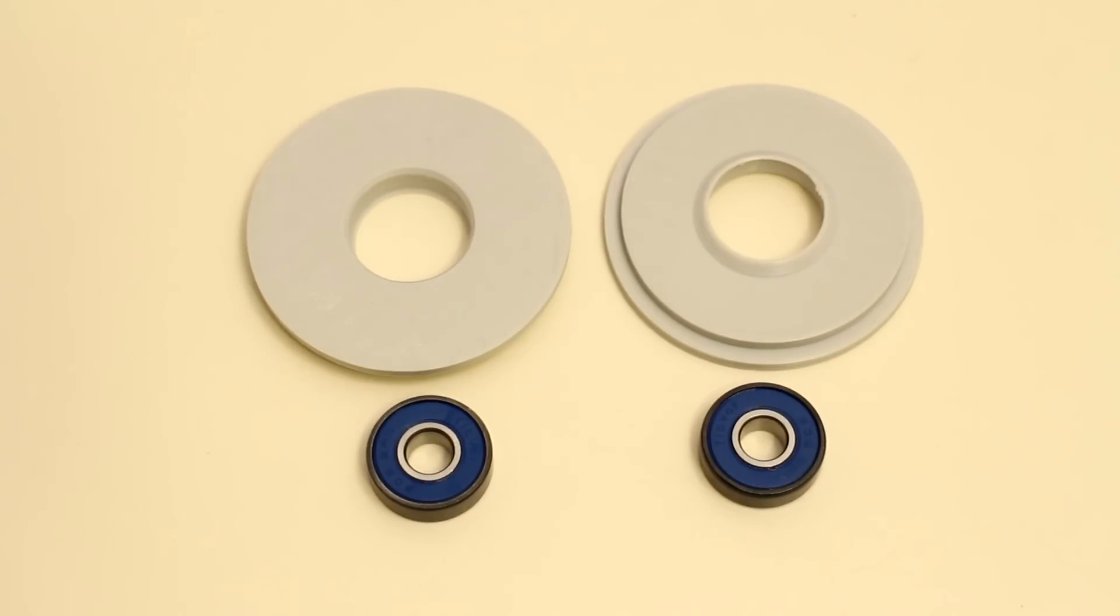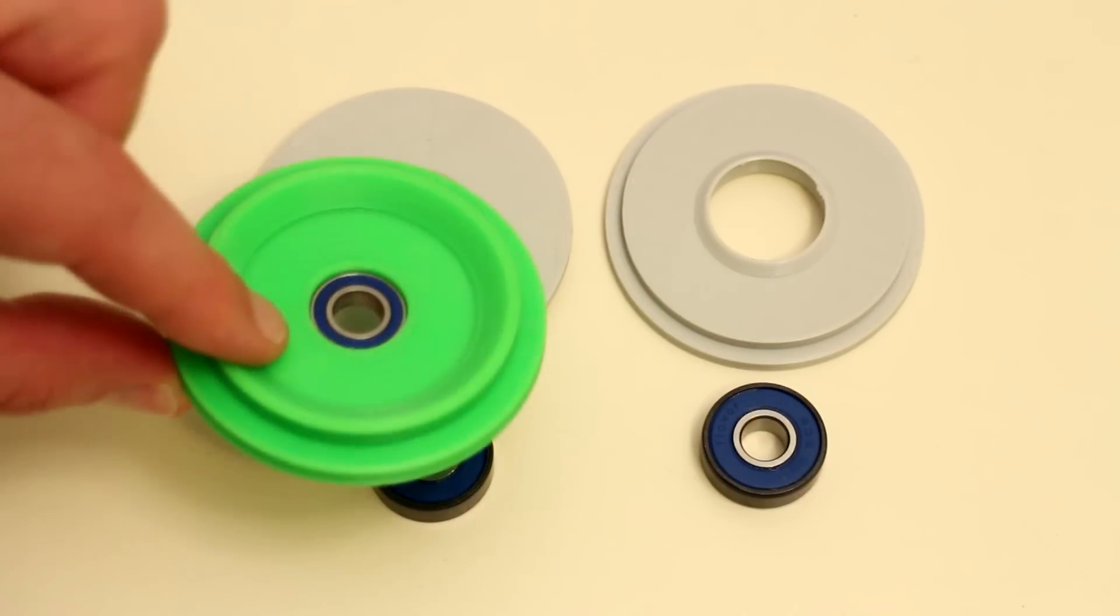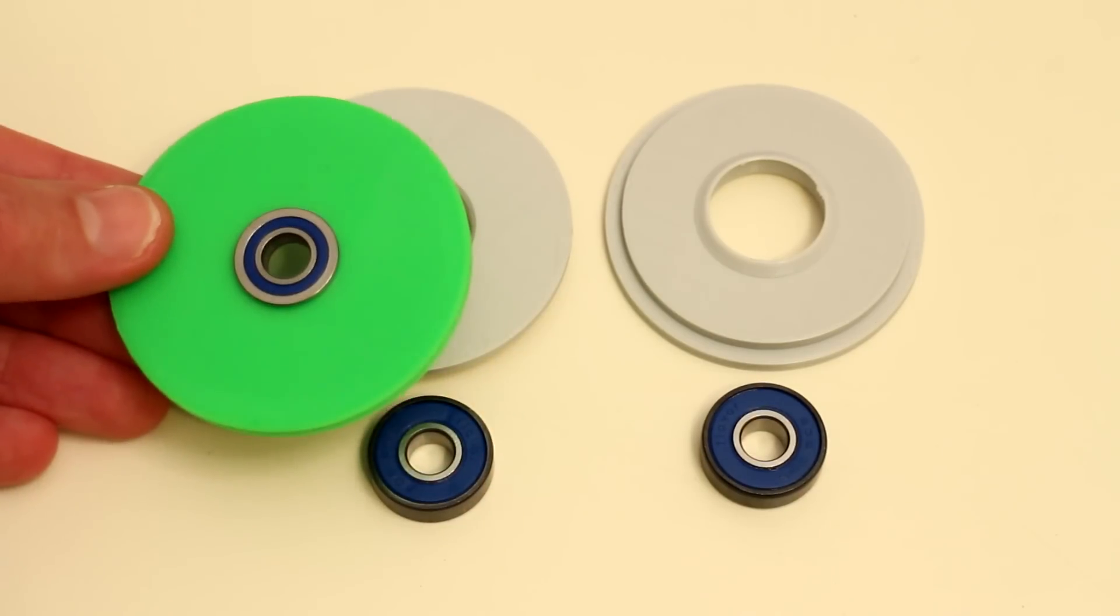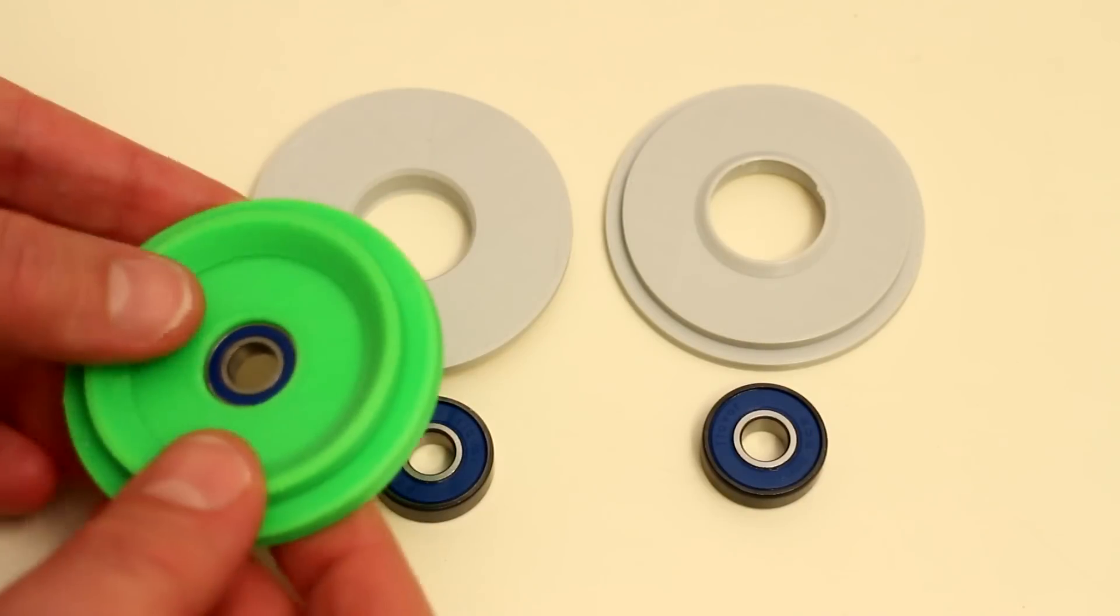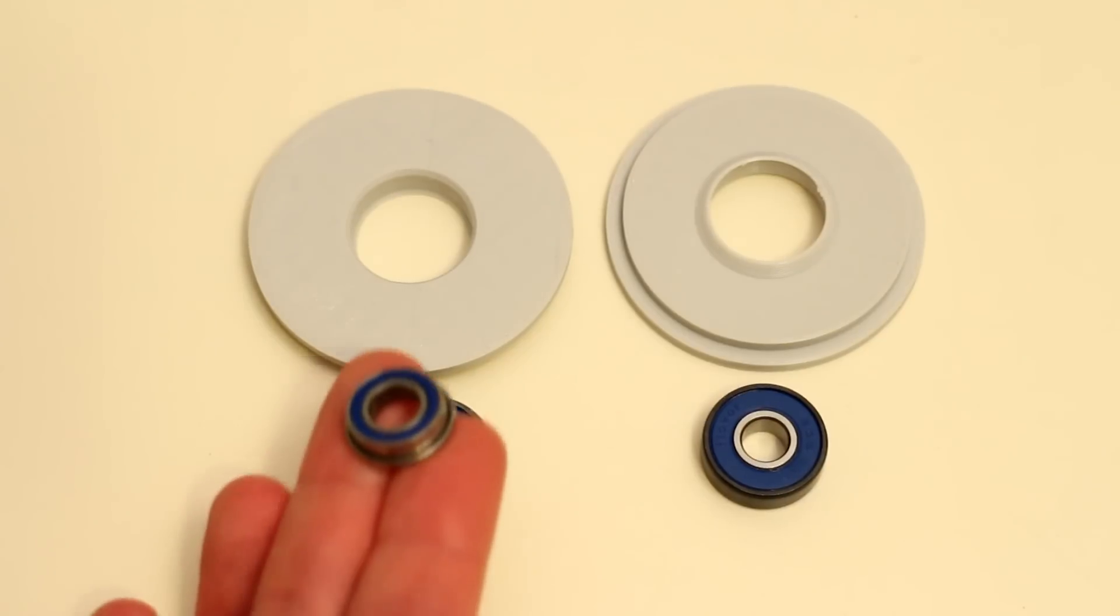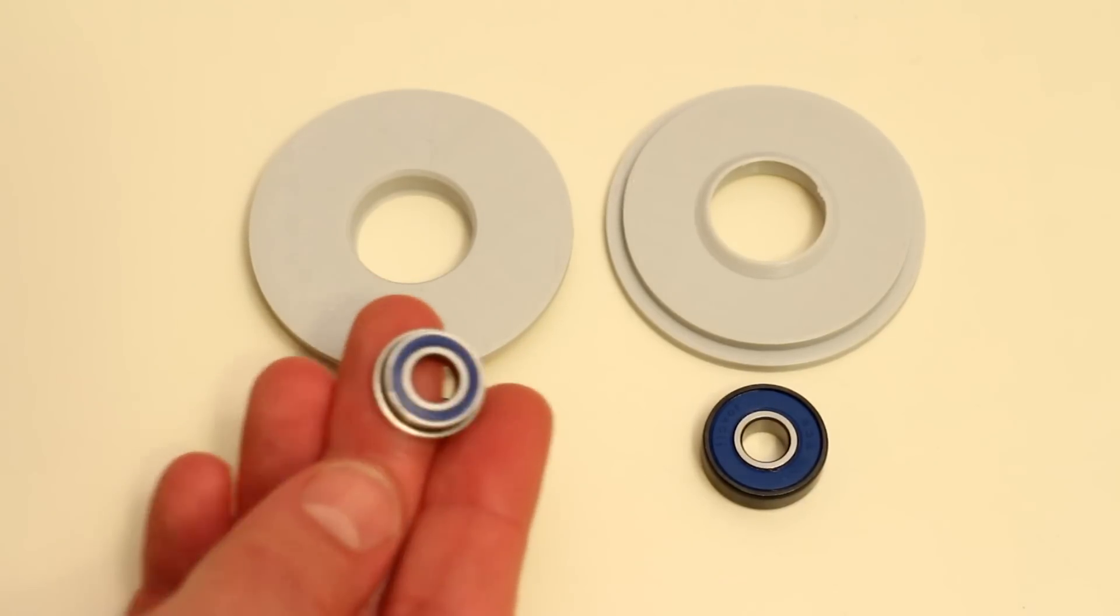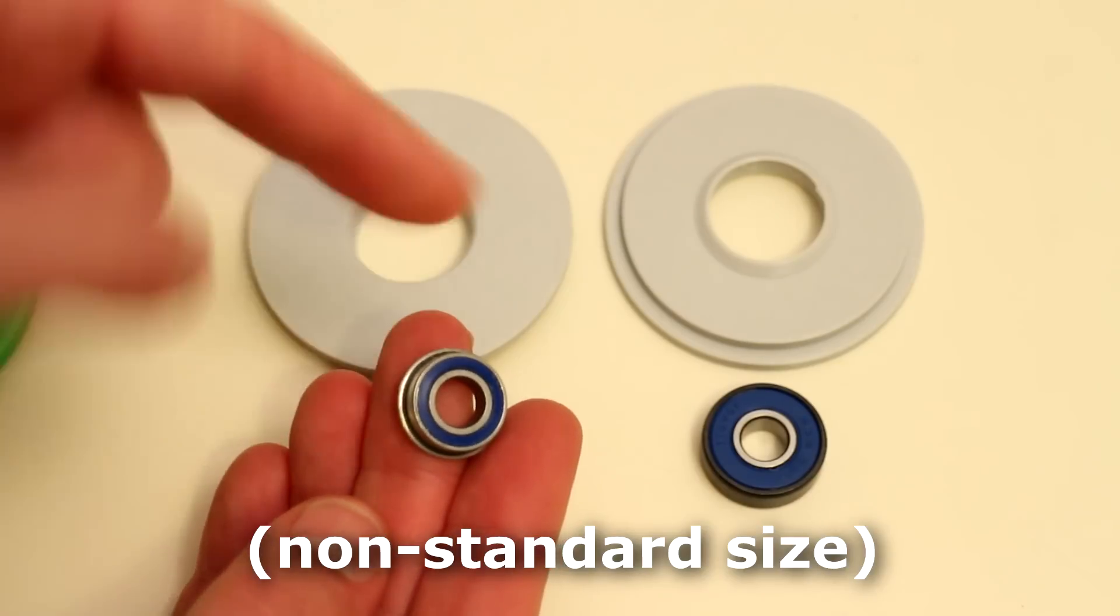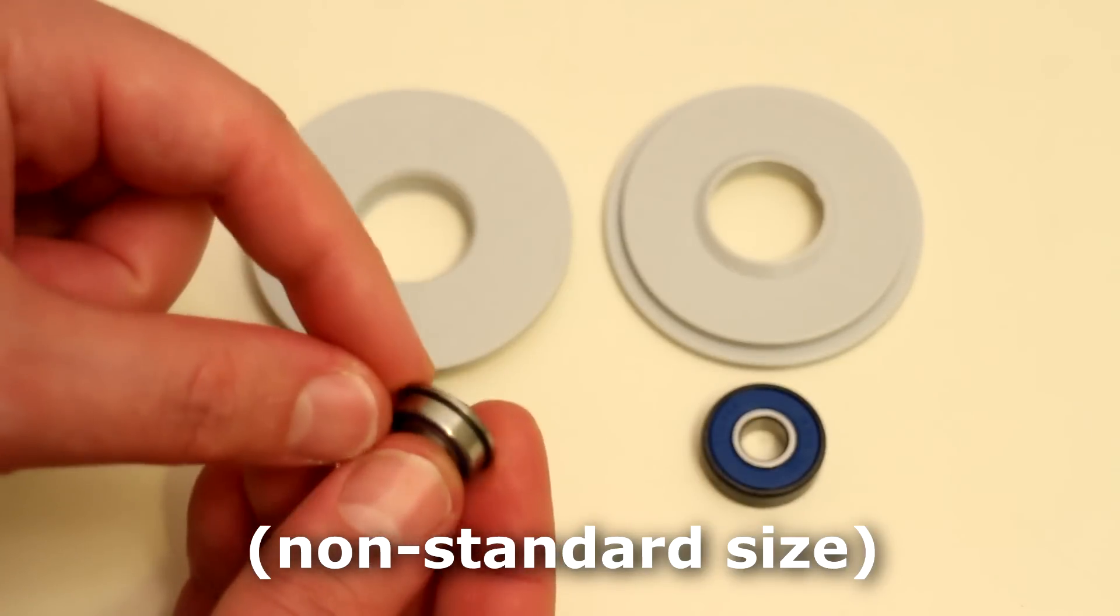Up until now I've been using this green spool holder that I knocked up a while ago. I made this in a CAD program. I actually designed this around these bearings that I had lying around. These are kind of odd bearings. They're in non-standard shape and they also have a flange on them.